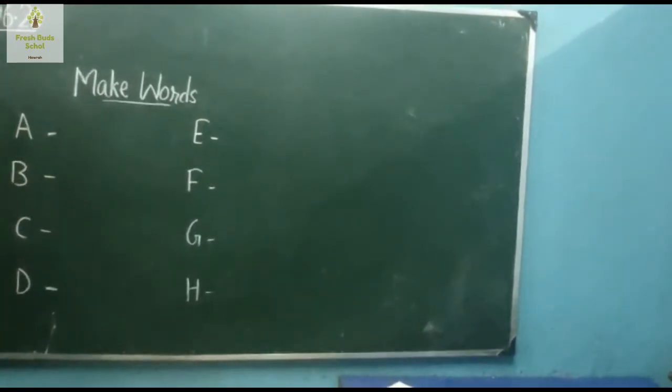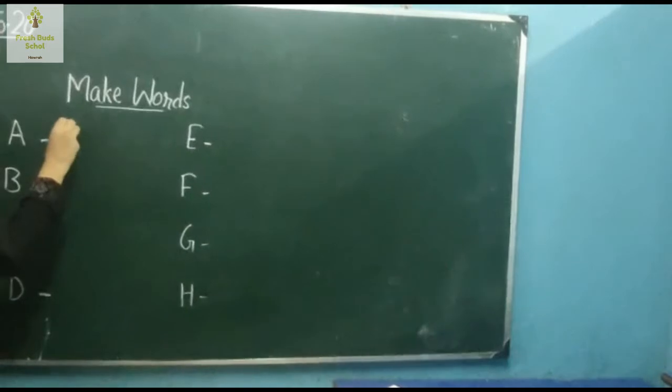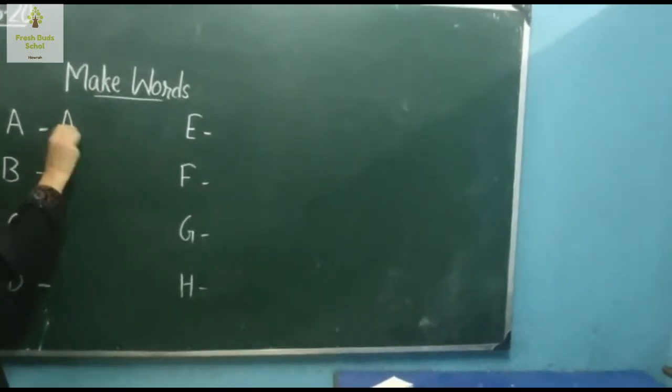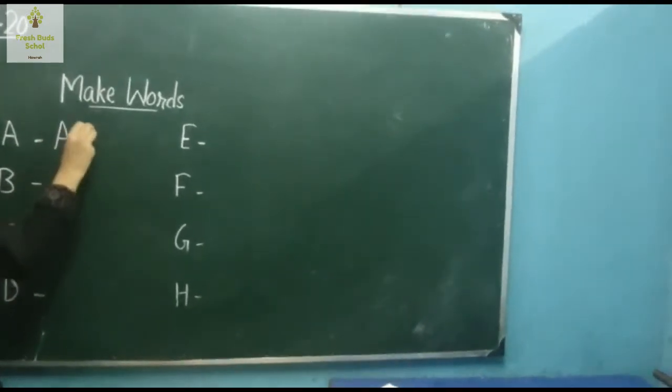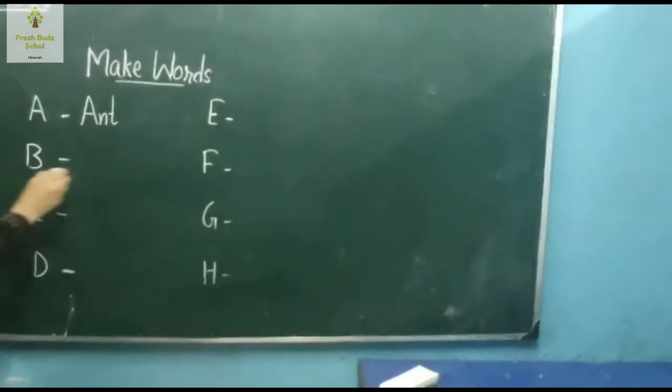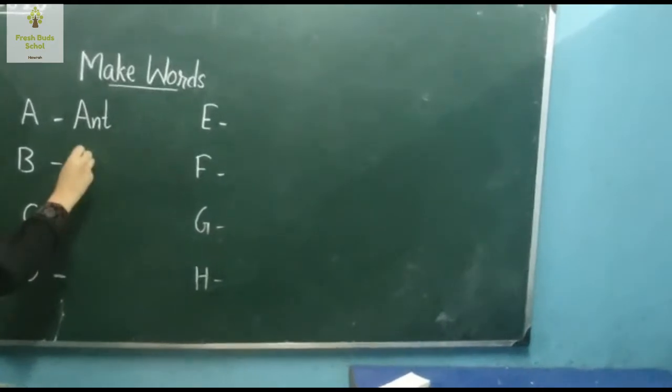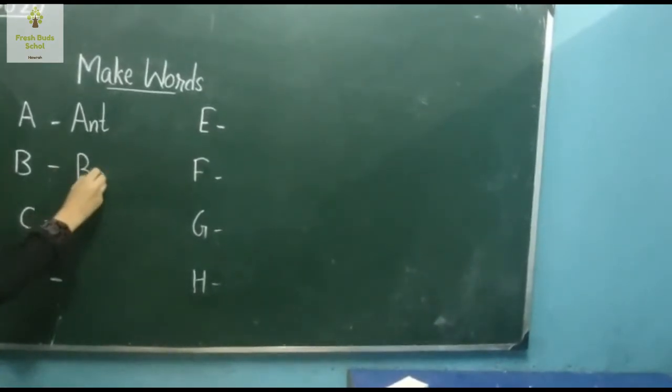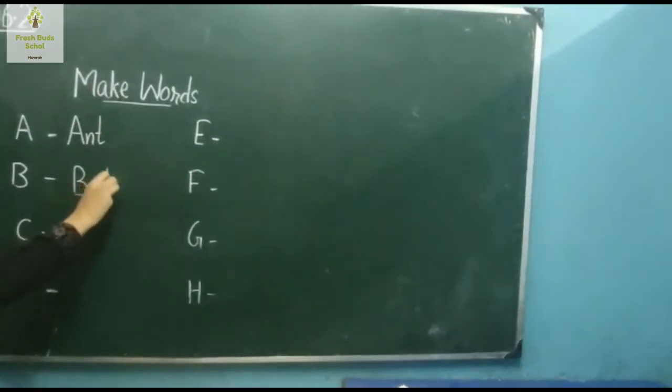We will make A words like A for ant, A and T. And B for bad, B, A, T, bad.